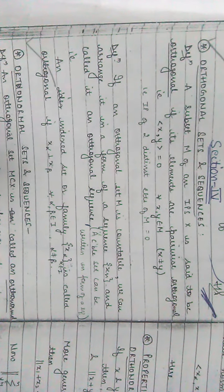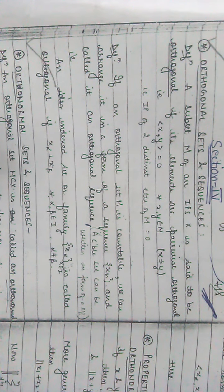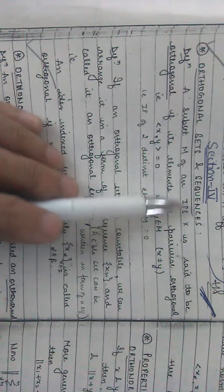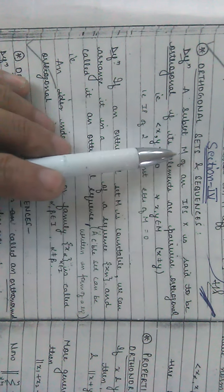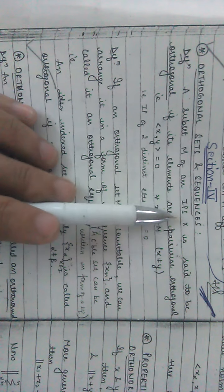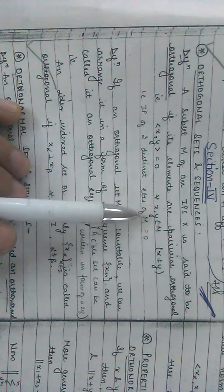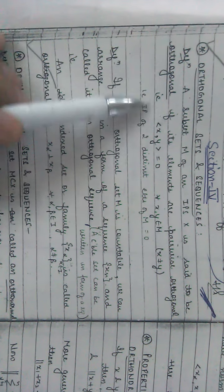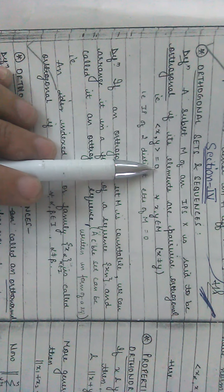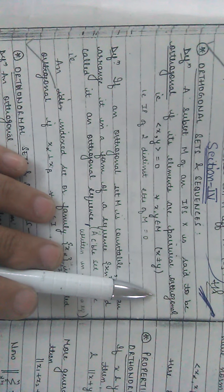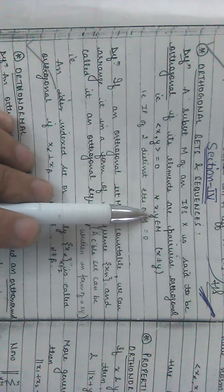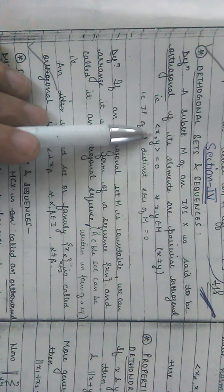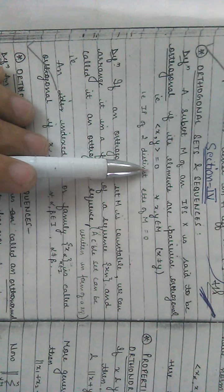First we define what are orthogonal sets and orthogonal sequences. If we take an inner product space X and M is any subset of X, then we say that M is an orthogonal set if its elements are pairwise orthogonal. This means for every two elements X and Y belonging to M, the inner product of X with Y is 0.